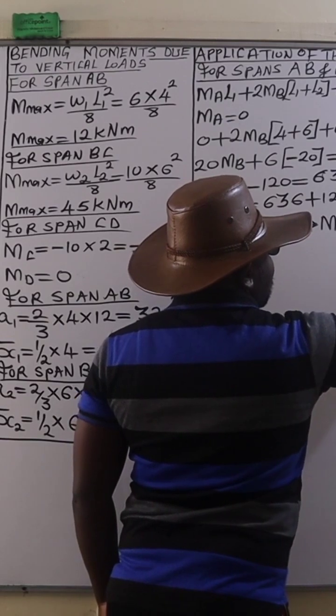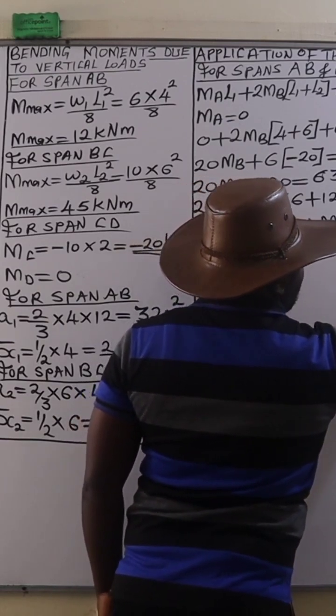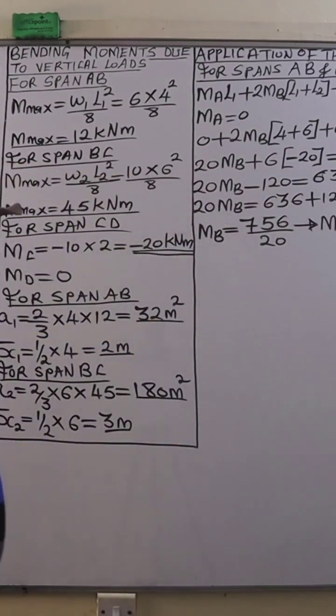Therefore ladies and gentlemen, that is the bending moment at B, and I think we now have all the bending moment values.